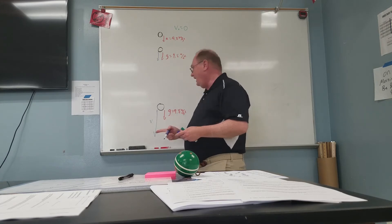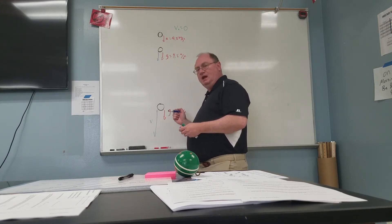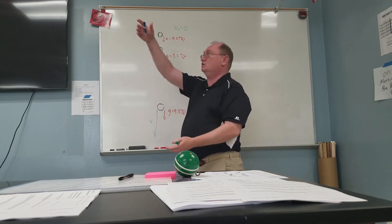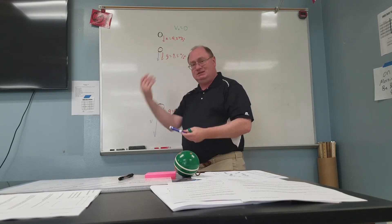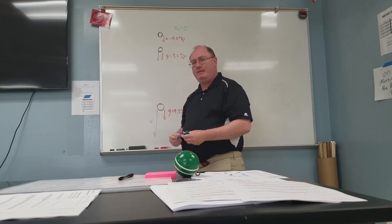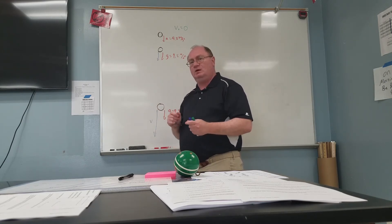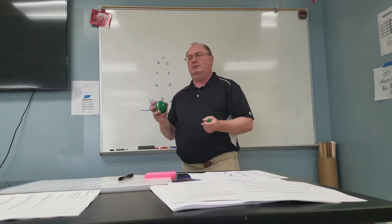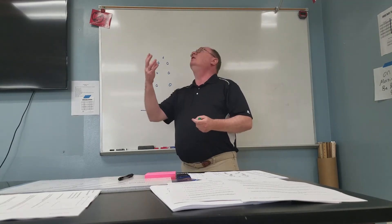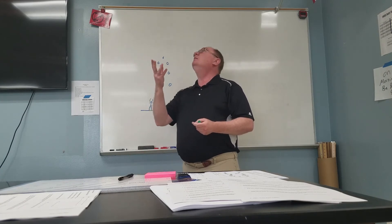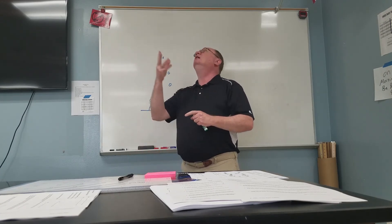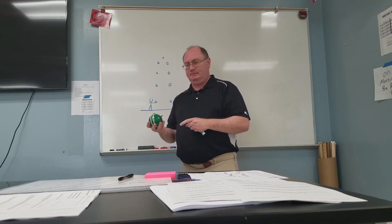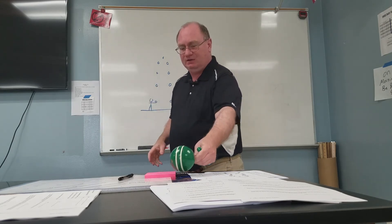It's going to gain 9.8 meters per second every second that it falls. So, as something is just dropped, the acceleration is down and the velocity is down. Now let's take a look at one where we're throwing a ball up into the air. When we throw a ball up into the air, we give it a speed. It's not in free fall until it leaves our hand. It goes up, comes to a stop, and comes back down.